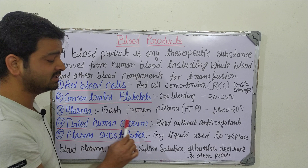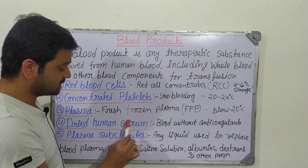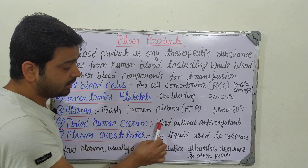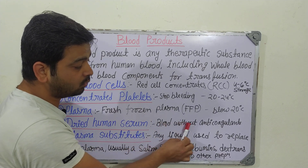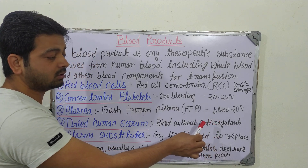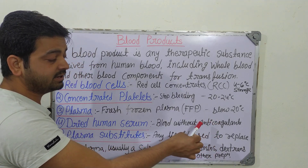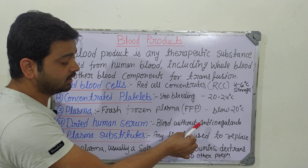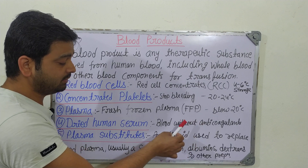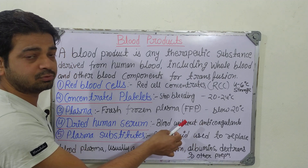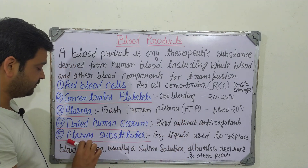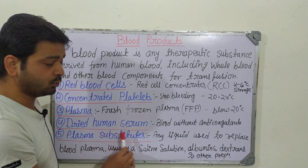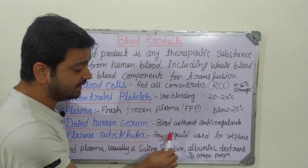The fourth one is dried human serum. As the name indicates, it is dried. It is human serum — blood without anticoagulants. It doesn't require any coagulants or anticoagulants, so it will be in dry form.